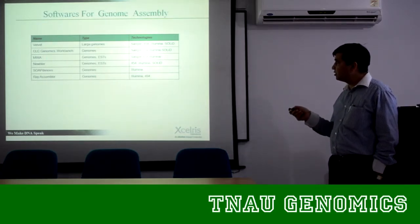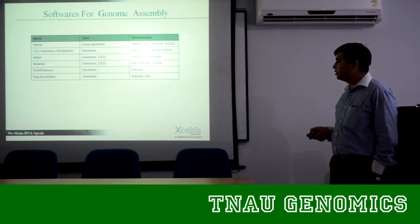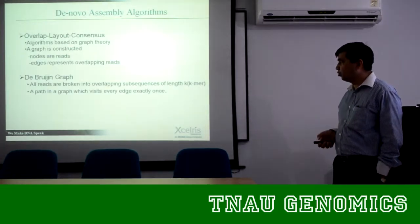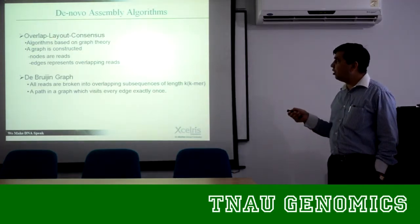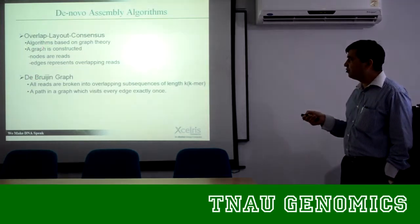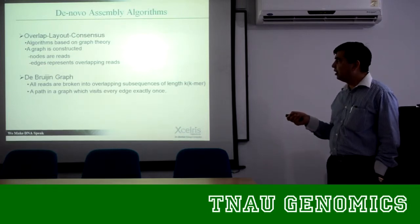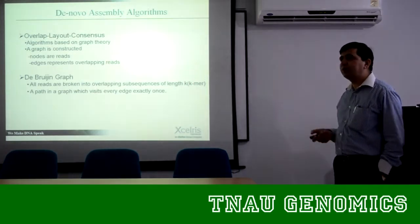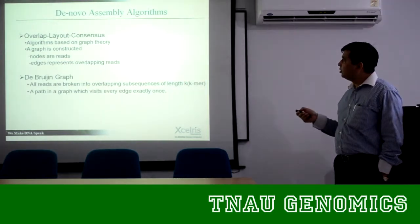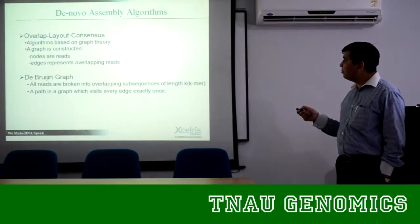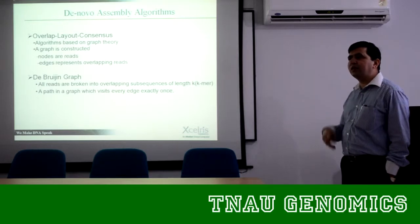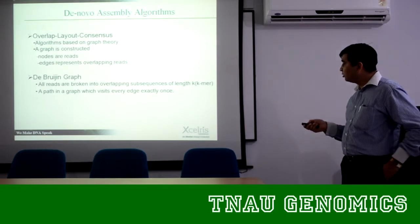These are the various programs and types of applications using various data sets. Not every program can take every data set — for example, the Ray assembler does not take SOLiD data, but Newbler, CLC, and Velvet can. Two main assembly algorithms are used: one is Overlap-Layout-Consensus (OLC), and the other is the de Bruijn graph approach. In the OLC approach, a graph is constructed based on overlapping reads. In de Bruijn, you generate k-mers — for example, a 29-mer from a sequence of 1 to 100 bp: the first k-mer is positions 1–29, the second is 2–30, the third is 3–31, and so on, assembling by overlap.